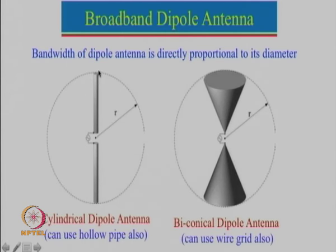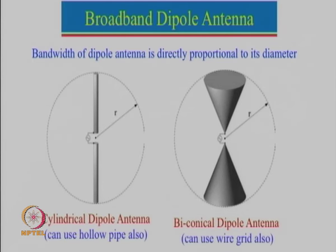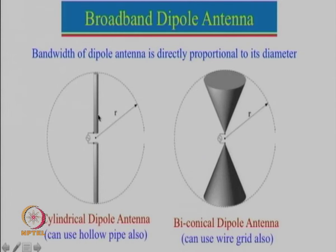The absolute maximum is where the diameter equals lambda, which is absolutely avoidable and should never be used. From that, we generally say the diameter of the dipole antenna should always be less than lambda by 10 so that resonance does not happen across the diameter. So please remember: we can only increase the dipole diameter to an absolute maximum of lambda by 10.